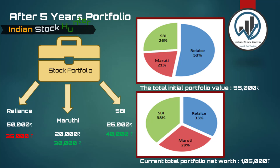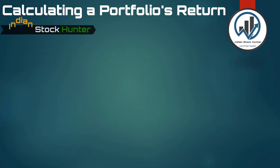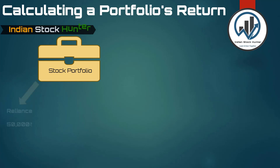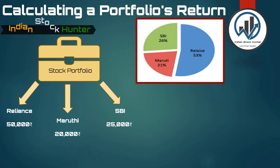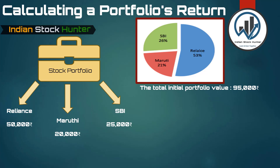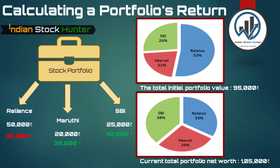Now let's look at calculating a portfolio's return, continuing with the same example. Five years back, Mr. Amrish had invested rupees 50,000 in Reliance, rupees 20,000 in Maruti, and rupees 25,000 in SPI. The current values of these investments are rupees 35,000, rupees 30,000, and rupees 40,000 respectively. Thus the total portfolio net worth changed from rupees 95,000 to rupees 1,05,000 — the total cumulative value of Mr. Amrish's investment increased by rupees 10,000 in the last five years.